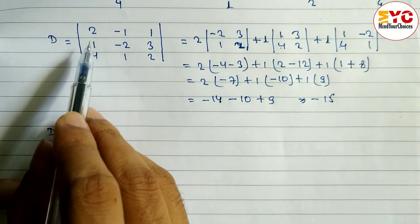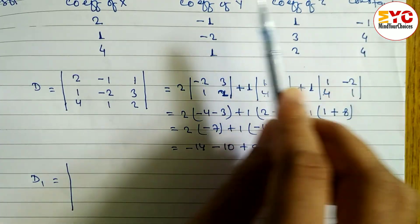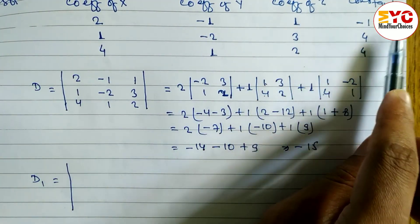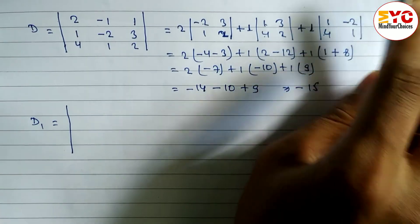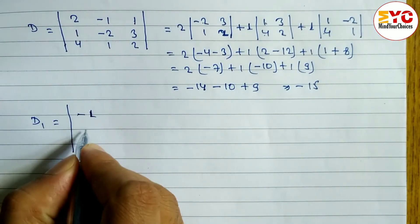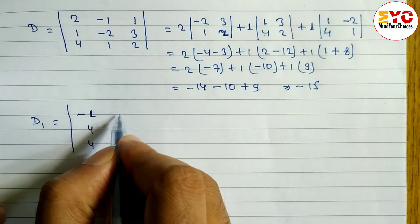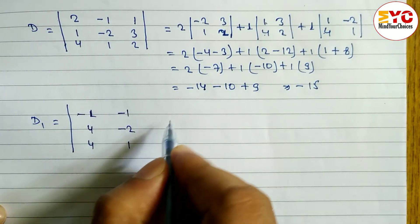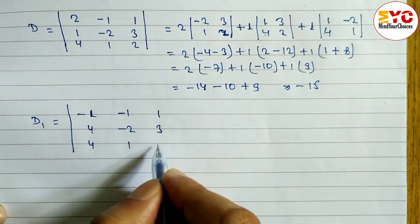Now we have to find out D1. To find D1, we replace the X-column with the constant numbers. So the first column becomes minus 1, 4, 4, then the coefficient of Y: minus 1, minus 2, 1, and then coefficient of Z: 1, 3, 2.